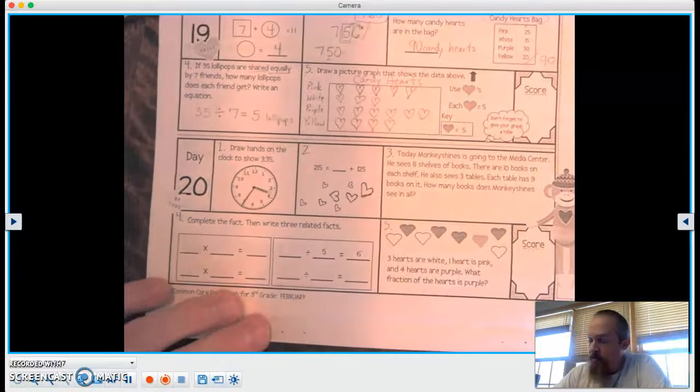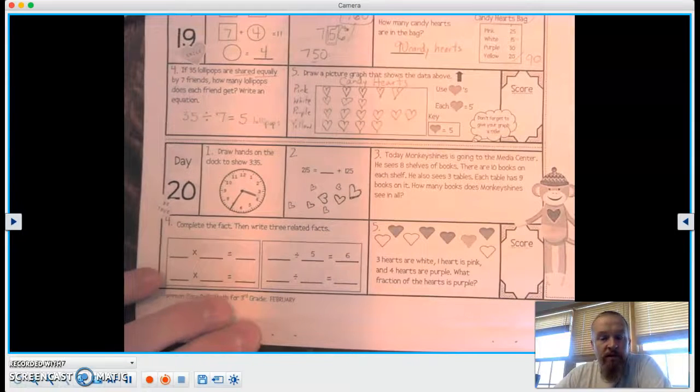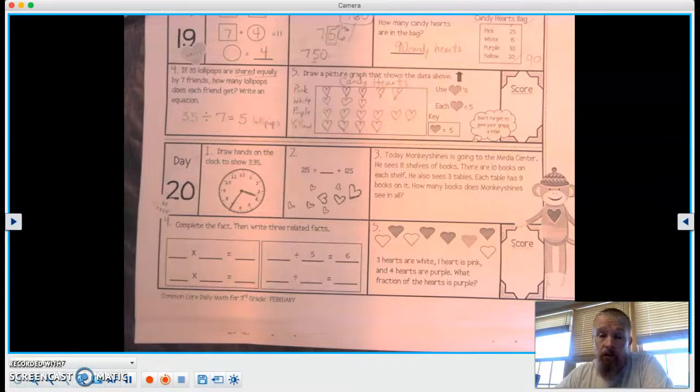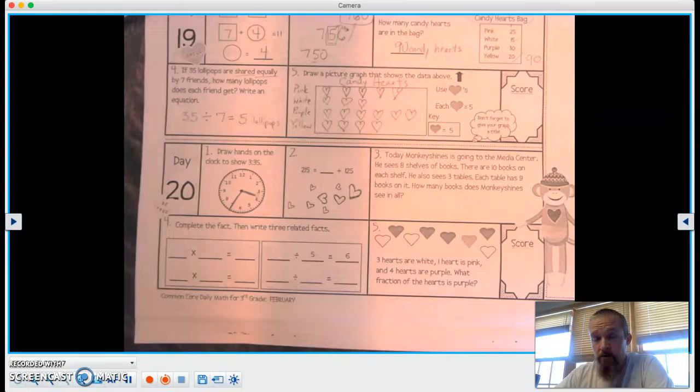All right, number two, 215 equals a number plus 125.